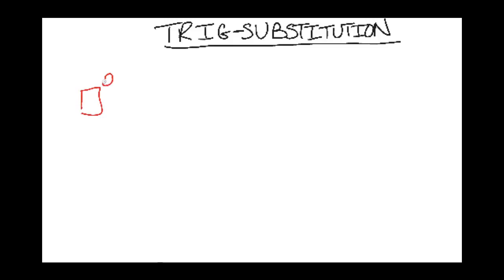The box in these things can be any variable whatsoever. So if you have the box squared plus a number squared, the substitution that you would do is a tangent substitution.